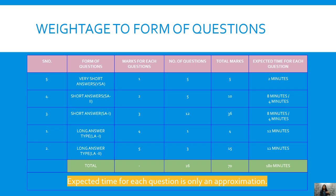Coming on to the short answer type questions: marks for each question will be 2 and the number of questions will be 5. Expected time will be 4 to 8 minutes. Then we come to the second type of short answer type questions, which will be of 3 marks each and there will be a total of 12 questions. This is the section where you can actually score very well because the difficulty level is average here, and you have to give 4 to 8 minutes to each question.